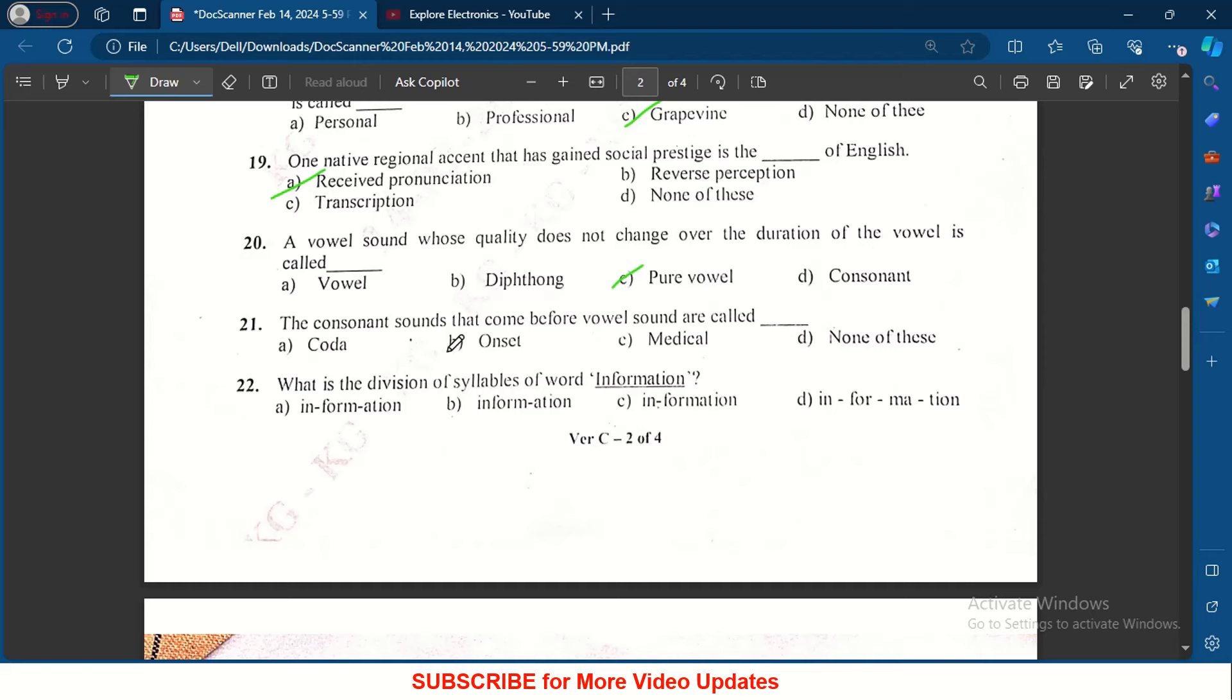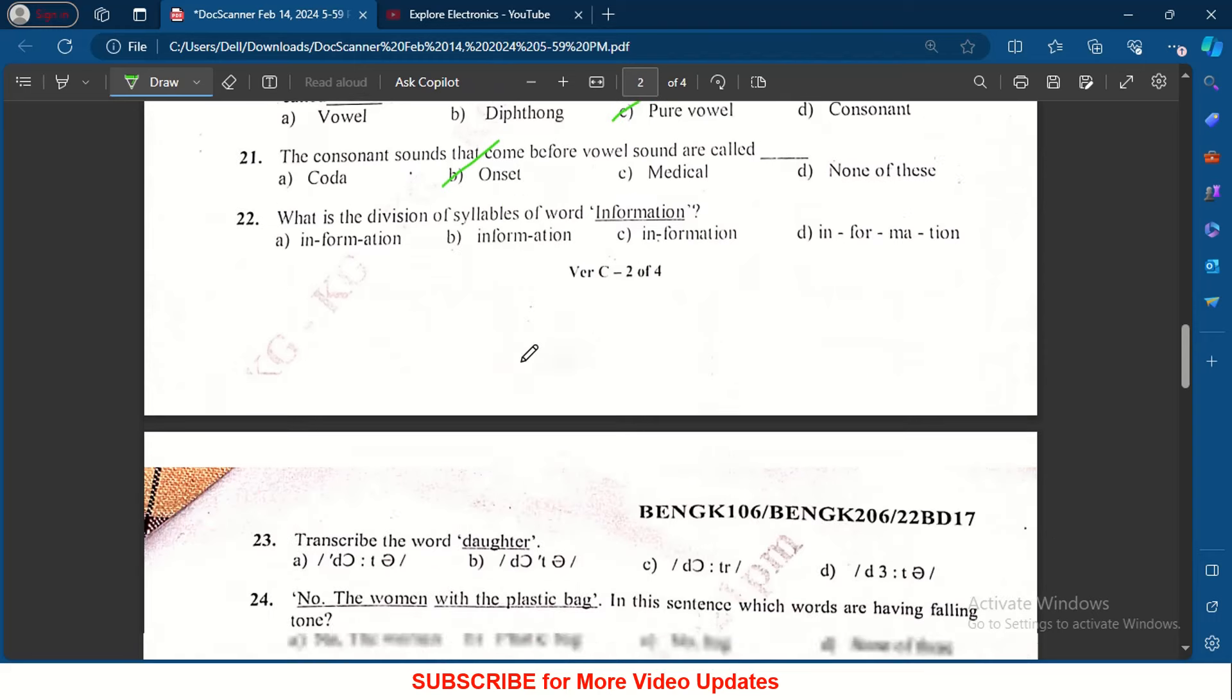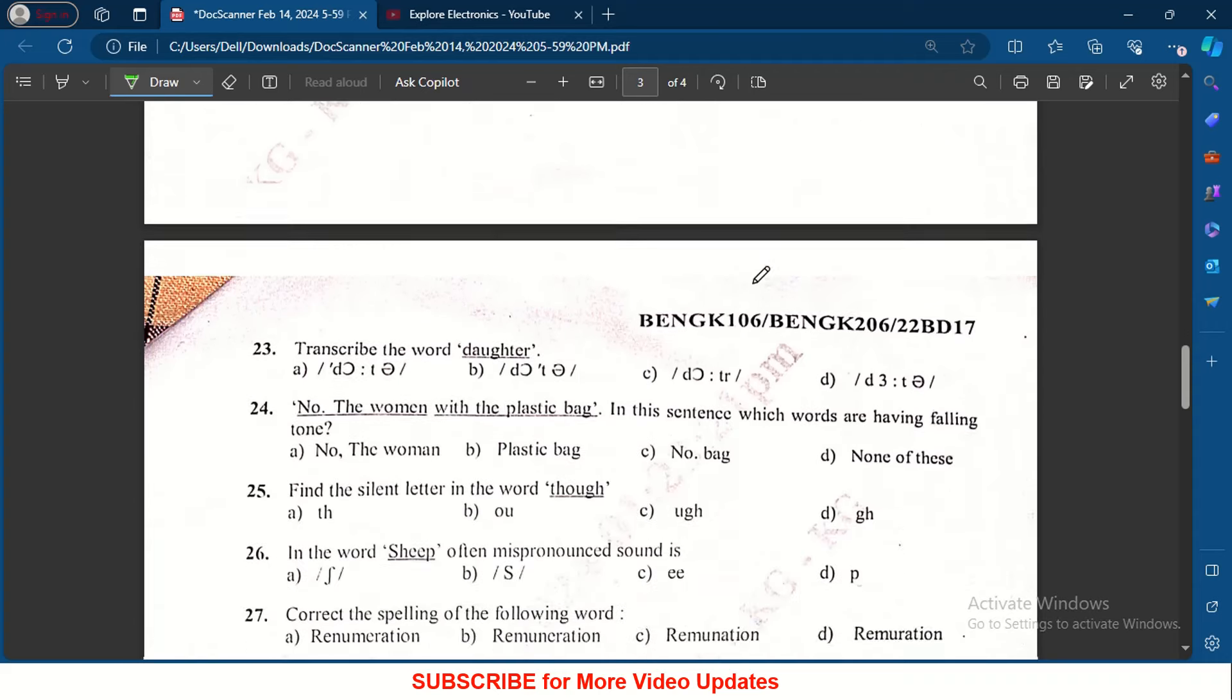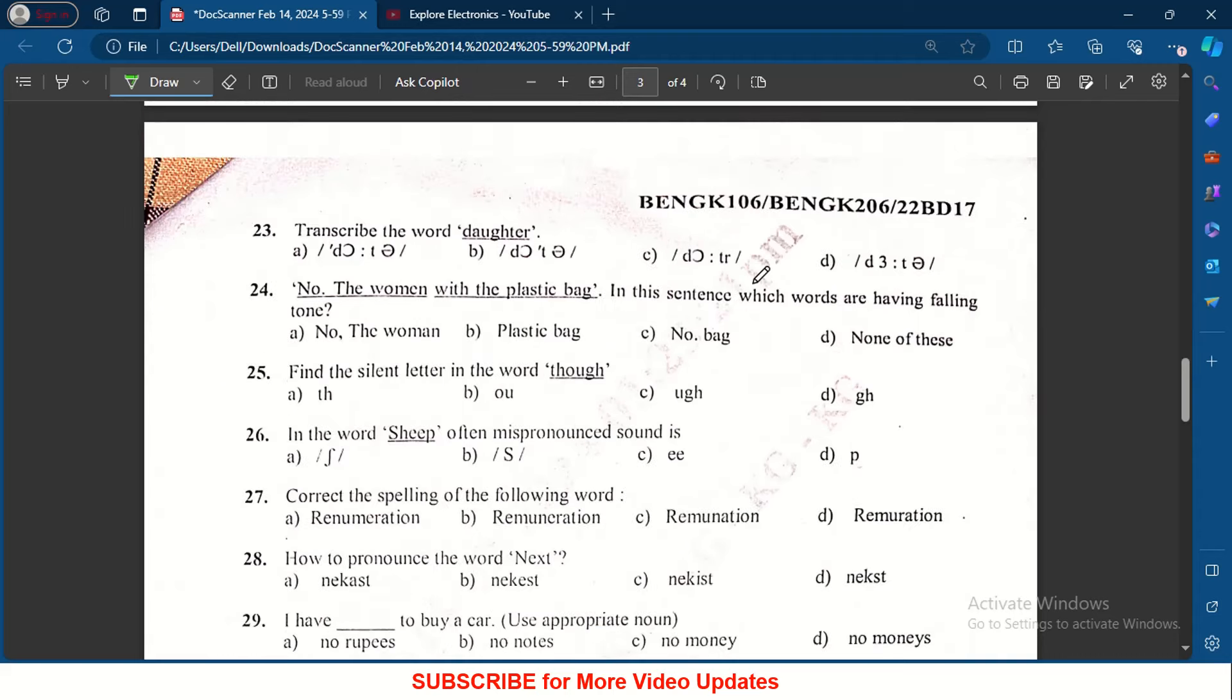What is the division of syllables of word information? It is in-for-ma-tion, D. Transcribe the word daughter - A is the answer. No, the woman with the plastic bag. In this sentence, which words are having falling tone? Here plastic bag having falling tone.